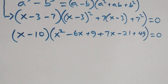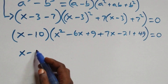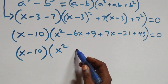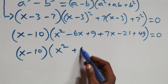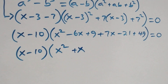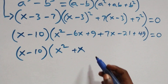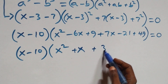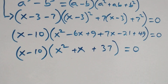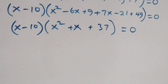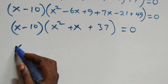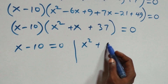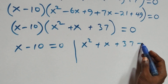We can write this as x minus 10 in brackets, times x squared minus 6x plus 7x giving us plus x, then minus 21 plus 49 giving us 28, then 28 plus 9 giving us 37, close bracket, equals to 0. Then here we also have two possible cases: x minus 10 equals to 0, or x squared plus x plus 37 equals to 0.